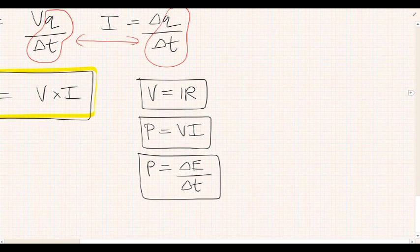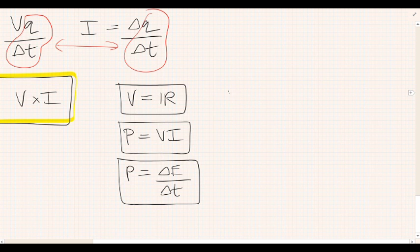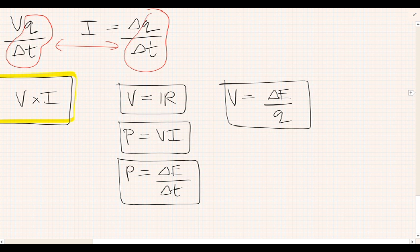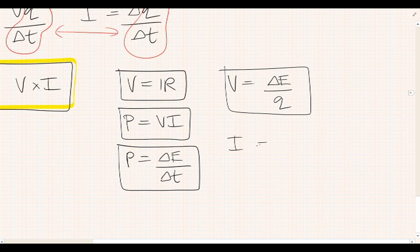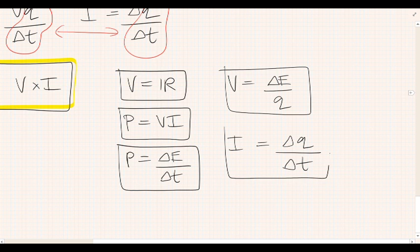And actually, more than that, it's more than three, because we also have the definition of voltage, which is the amount of energy per Coulomb of charge. And we also have the definition of current, which is the rate at which charge flows over time.